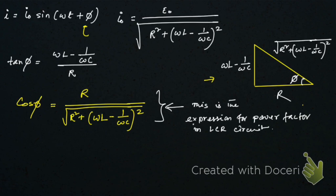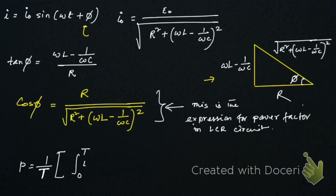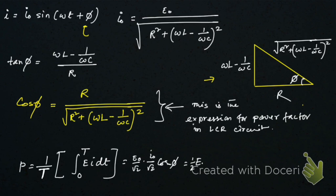Now the average power in this LCR circuit can be obtained from P = (1/T) ∫₀ᵀ e·i dt. After integration over one complete cycle, we get the result: (E₀/√2)(i₀/√2) cos φ.